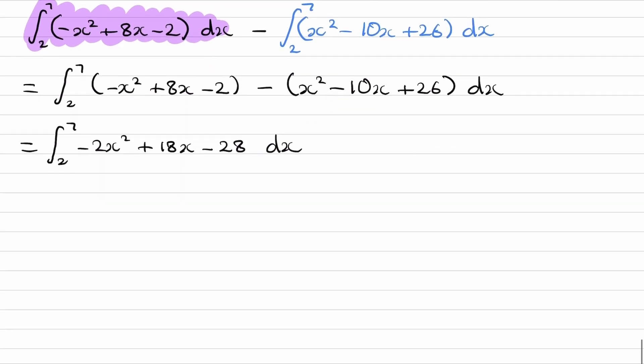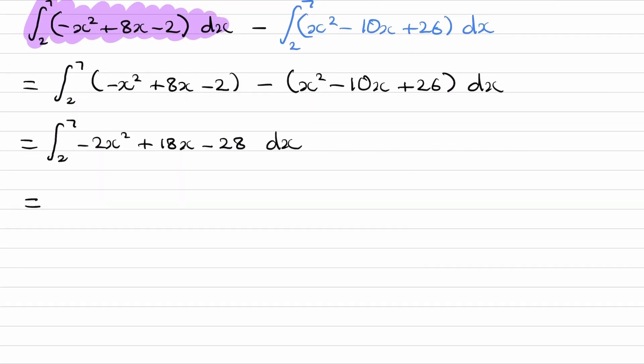So we're integrating this between 2 and 7, and that will give us our answer. Raise the power by 1, divide by the new power, and constants integrate to make themselves plus an x next to them, limits of 7 and 2.